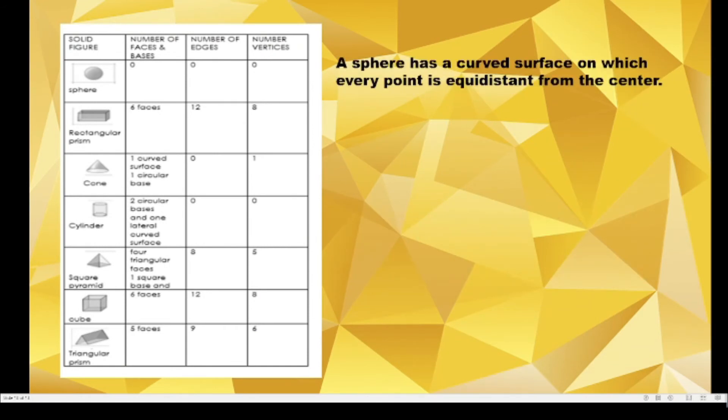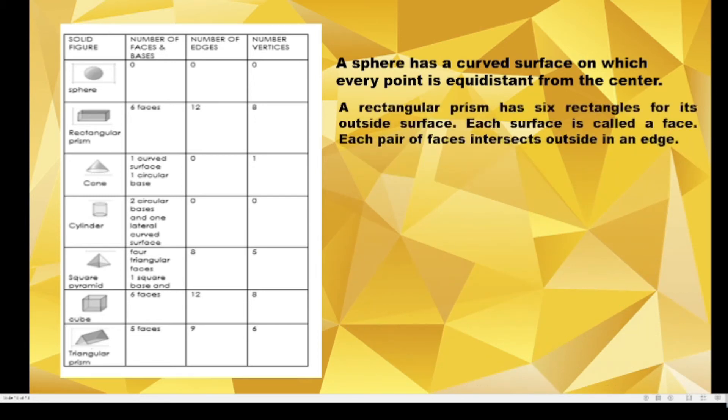A sphere has a curved surface on which every point is equidistant from the center. While rectangular prism has six rectangles for its outside surface, each surface is called a face. Each pair of faces intersect outside in an edge.